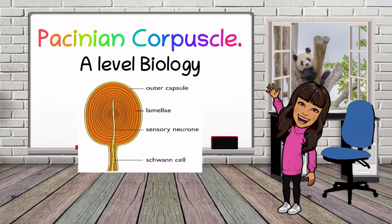Hi everyone and welcome to another video by BioTeach, this time focusing on some A-level content, specifically the Pacinian corpuscle. This comes under the receptors topic right before you look at the nervous system and it's part of the A2 syllabus.